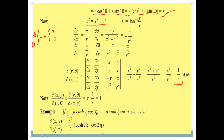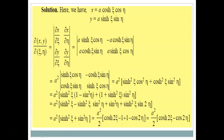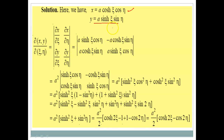In exactly the same manner, if x is in terms of variables ξ and η and y is in terms of ξ and η, we can show that ∂(x,y)/∂(ξ,η) equals a specific value. Finding the partial derivatives ∂x/∂ξ, ∂x/∂η, ∂y/∂ξ, and ∂y/∂η, substituting into the determinant, and simplifying gives us the required result — that is what we wanted to prove.